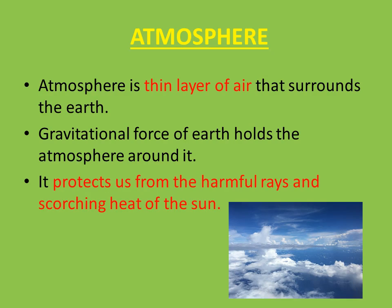The third domain of natural environment is atmosphere — a thin layer of air that surrounds the earth. The gravitational force of earth holds the atmosphere around it, ensuring it doesn't escape. Atmosphere is very important as it protects us from the harmful rays and scorching heat of the sun. The ozone layer, present in the atmosphere, protects us from the UV or ultraviolet rays of the sun.